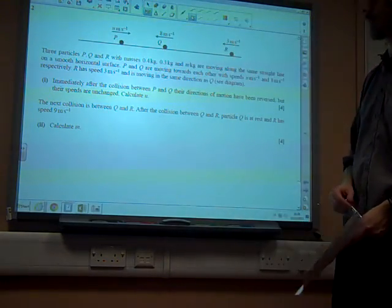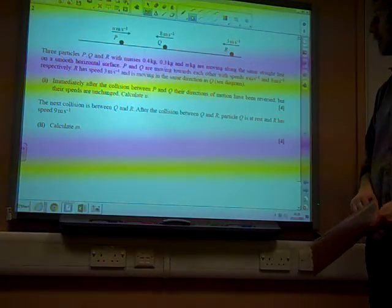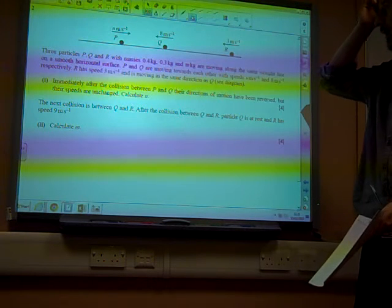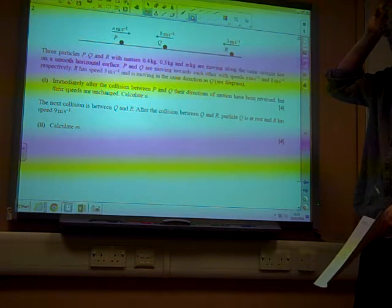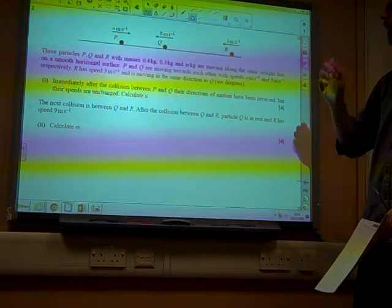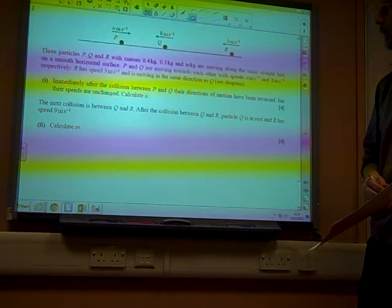Okay, question two. Three particles, P, Q and R, with these masses, are moving on the same straight line. P and Q are moving towards each other with speeds U and 8, and R at speed 3 in the same direction as Q.